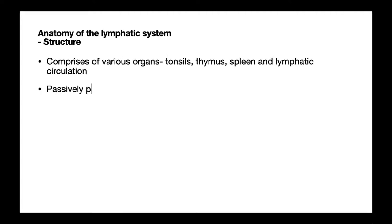Let's look at the anatomy of the lymphatic system in more detail. A number of organs play a role, including the tonsils, thymus, and spleen. Lymph itself is passively pumped around the body — three key things help move it. The first is the arteries: being in close proximity to the lymphatic circulation, when arteries pulsate they produce a pressure that helps lymph move. The second is muscle contraction, which again causes lymph to move where it needs to.